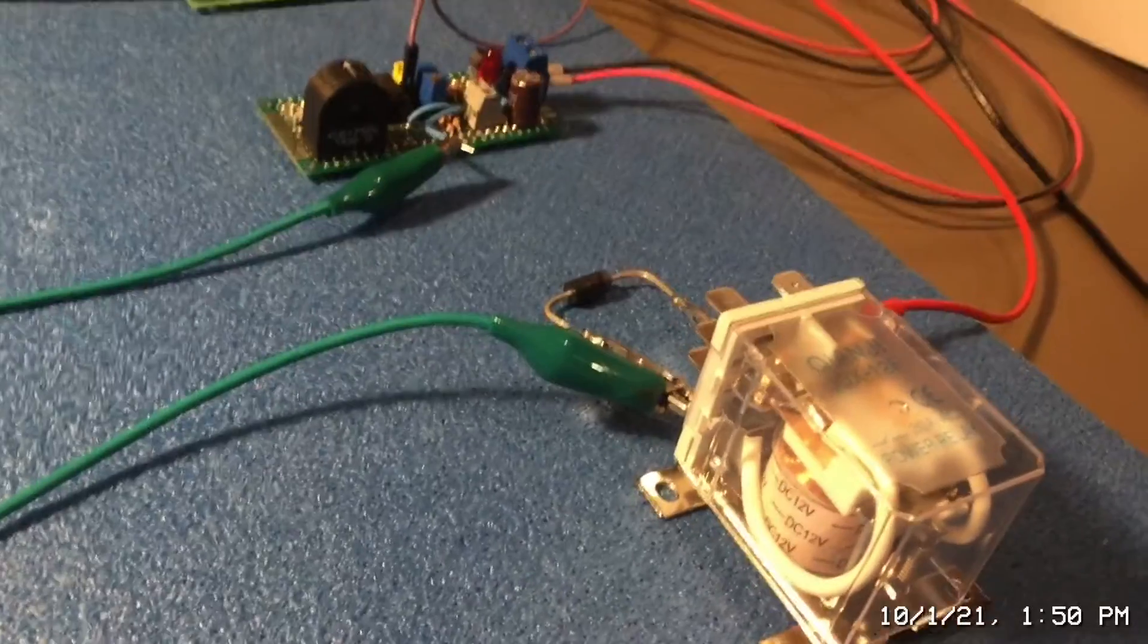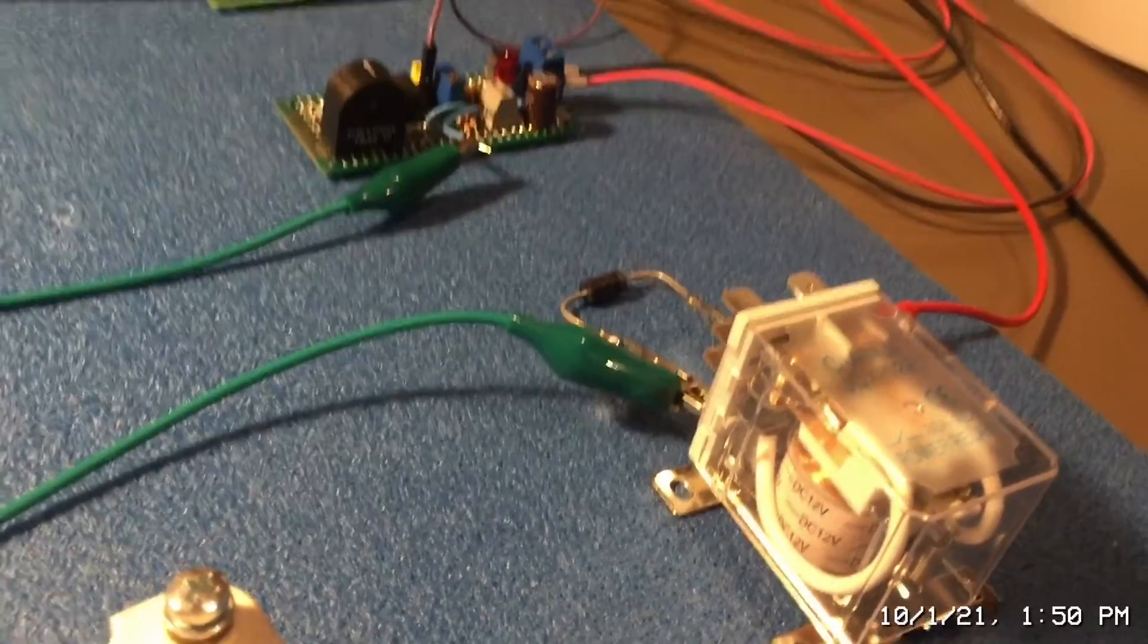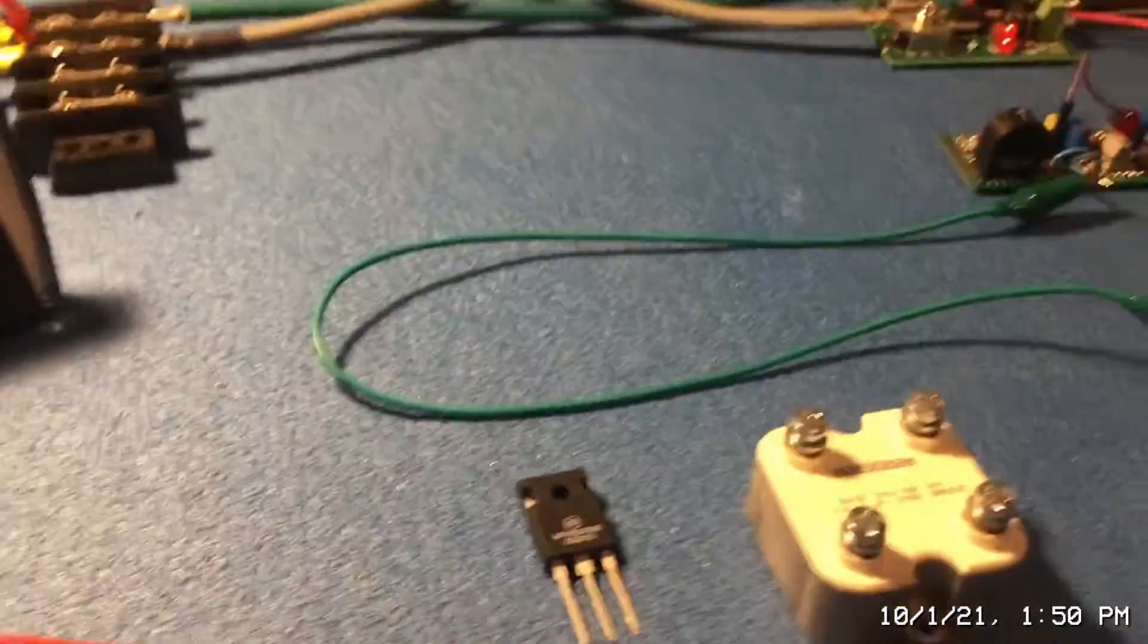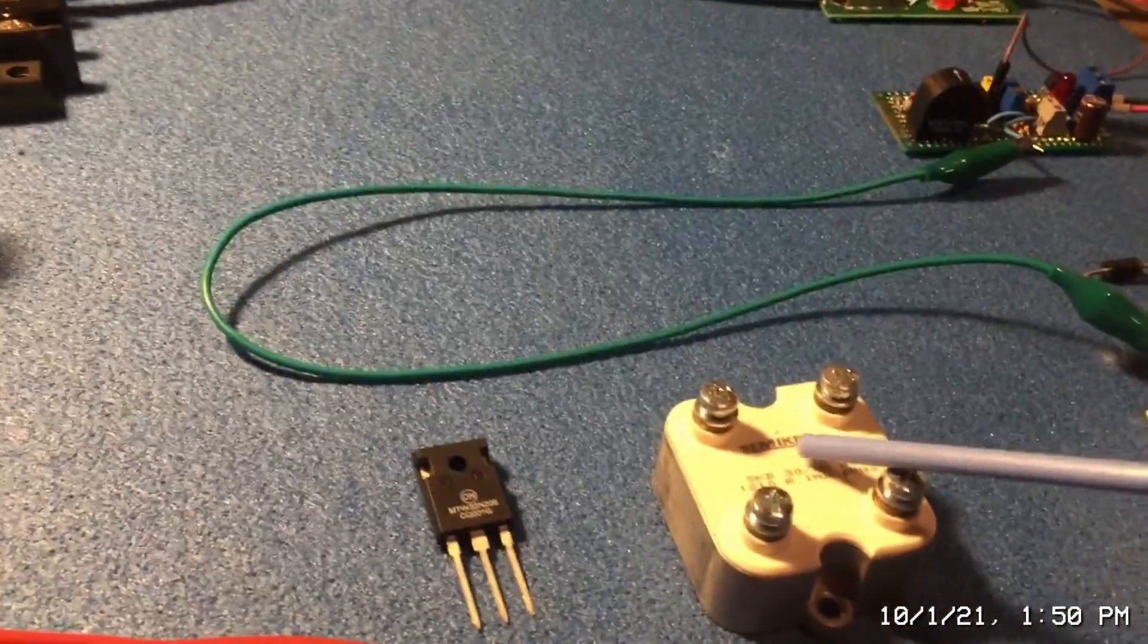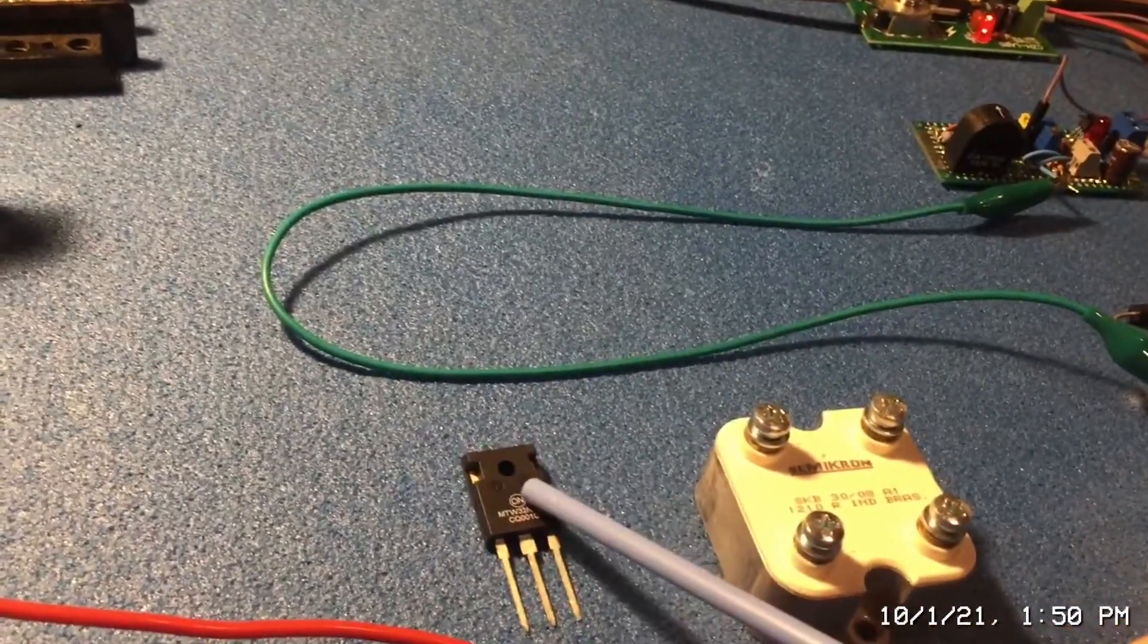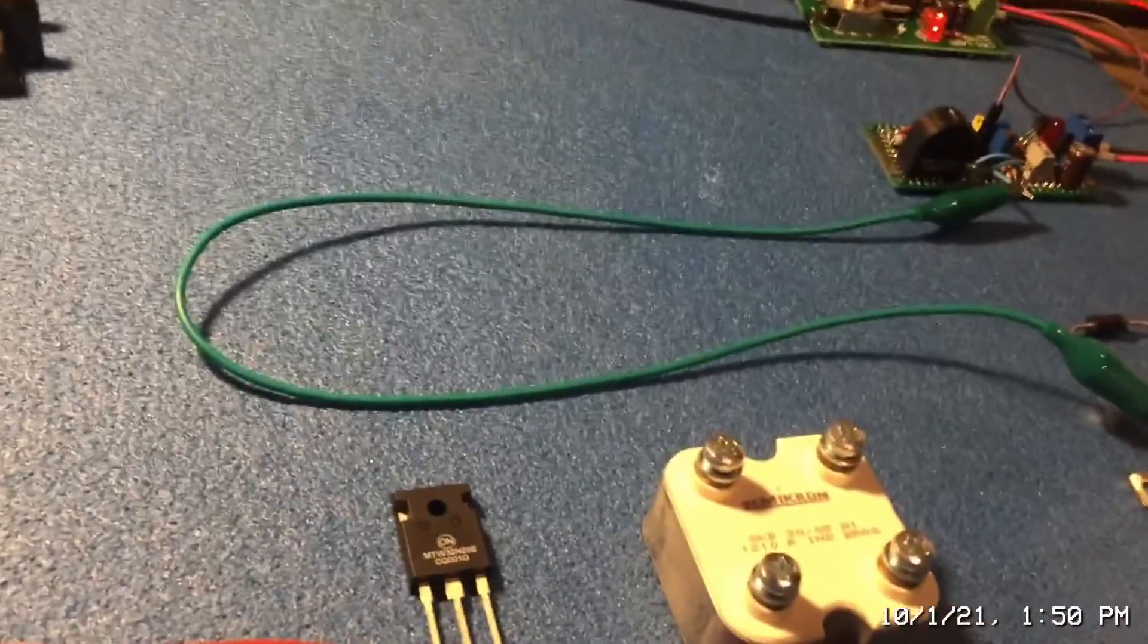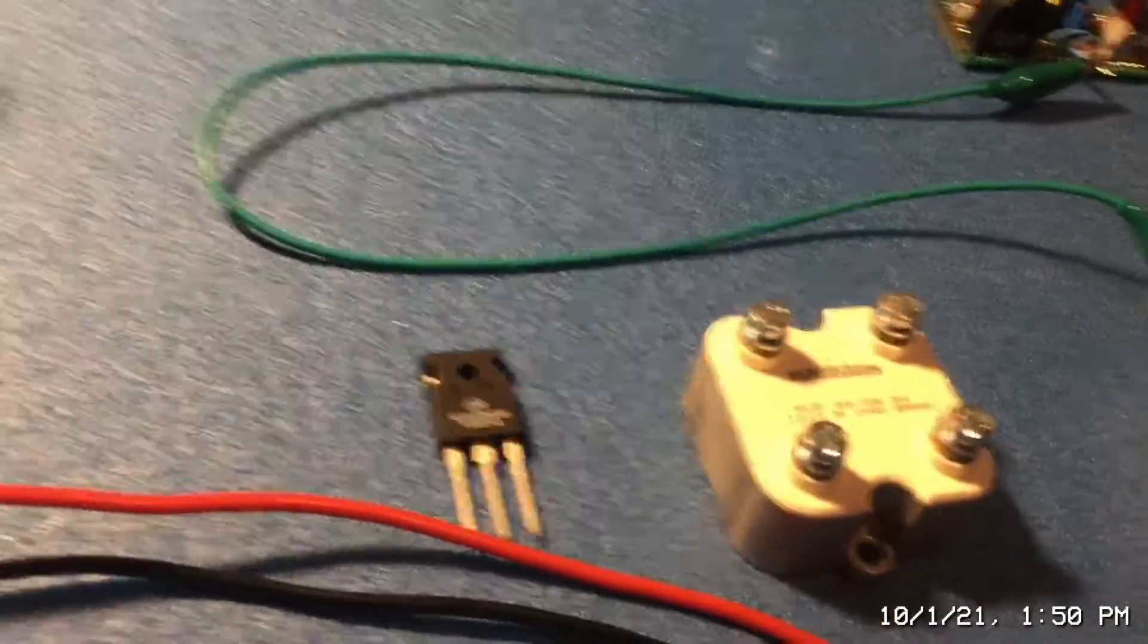But you can also use devices like solid-state relays or even a MOSFET transistor. So that's what I have here. This is a solid-state relay you could trigger this device or you can even trigger a MOSFET transistor to protect your transistor circuits.